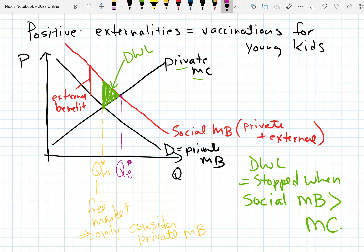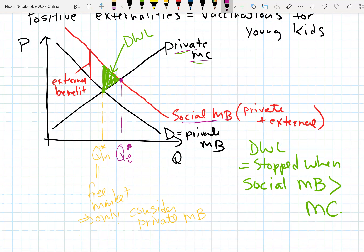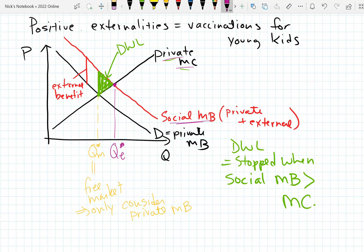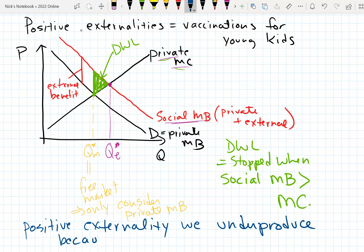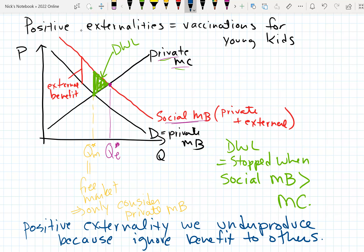So again, the efficient equilibrium was here, but we stopped too early. We should have gone until our social marginal benefit equaled our marginal cost. This is the same situation but reversed from what we talked about with the negative externality. With a positive externality, we underproduce — or in this case underconsume — because we ignore the benefit to others. Before, firms were ignoring the cost to others; now, people getting these vaccines are ignoring the benefits to others.